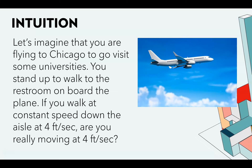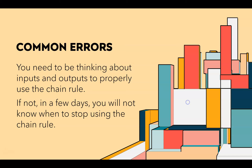Imagine you're flying to Chicago and you walk to the restroom on the plane at four feet per second. Are you really moving at four feet per second? The answer is no — it's four feet per second compared to the seats on the plane, but compared to the ground you're moving much quicker. The chain rule is kind of like that: you have to account for the rate of change of the thing inside, and the rate of change of the outer thing.